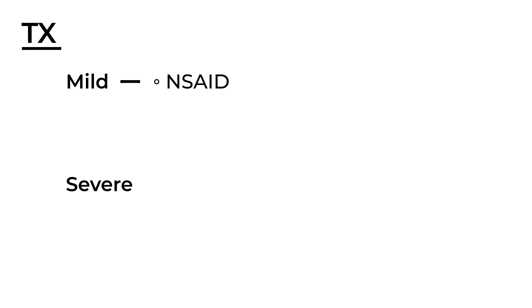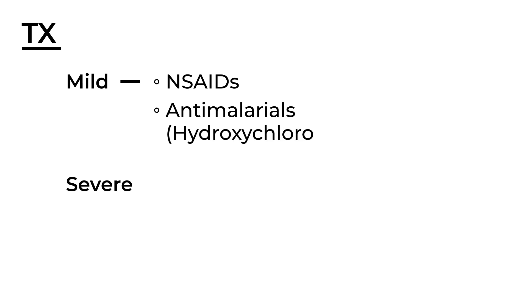Treatment of lupus falls into two categories — mild and severe. For mild lupus, NSAIDs are often sufficient. Interestingly, anti-malarial drugs are also used in mild cases, with hydroxychloroquine being a key example. For severe cases of lupus, steroids are used — for example, prednisone.